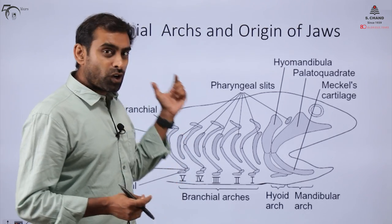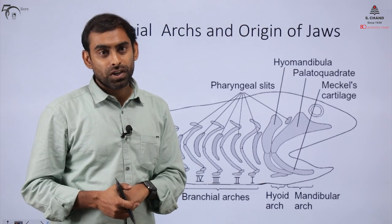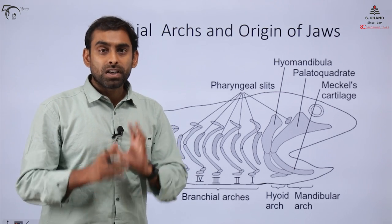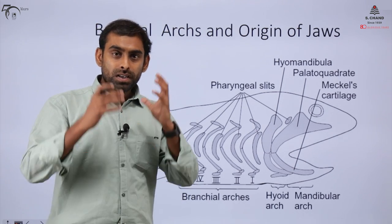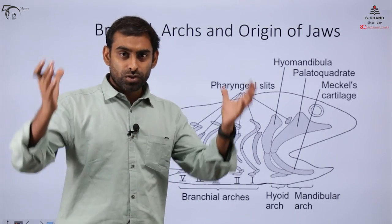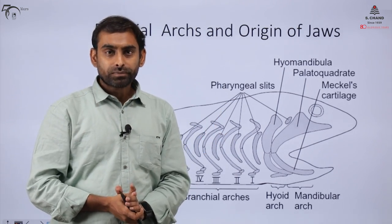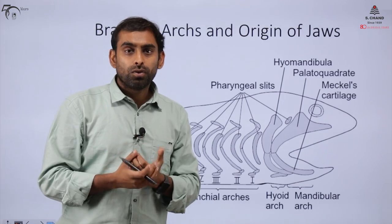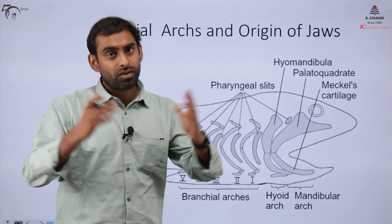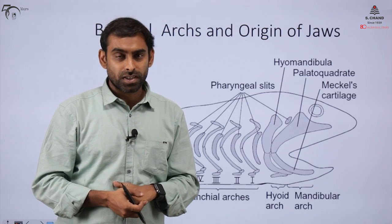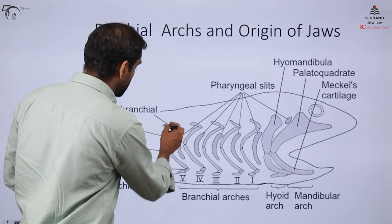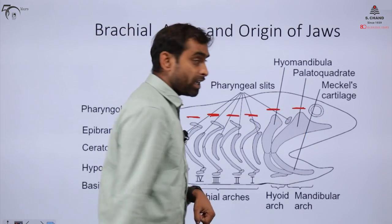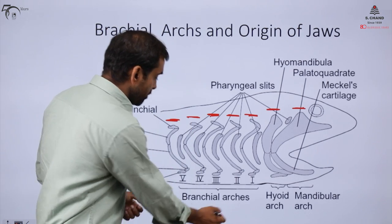This is where ontogeny is helpful in evolutionary biology. Through comparative anatomy of embryos, we can understand how jaws developed. The bones from which our jaws developed also became part of our skull. That is why the cranial skeleton — the brain case — is studied along with jaws as a separate component, while the remaining skeleton is discussed separately. This is depicted through the concept of branchial arches.